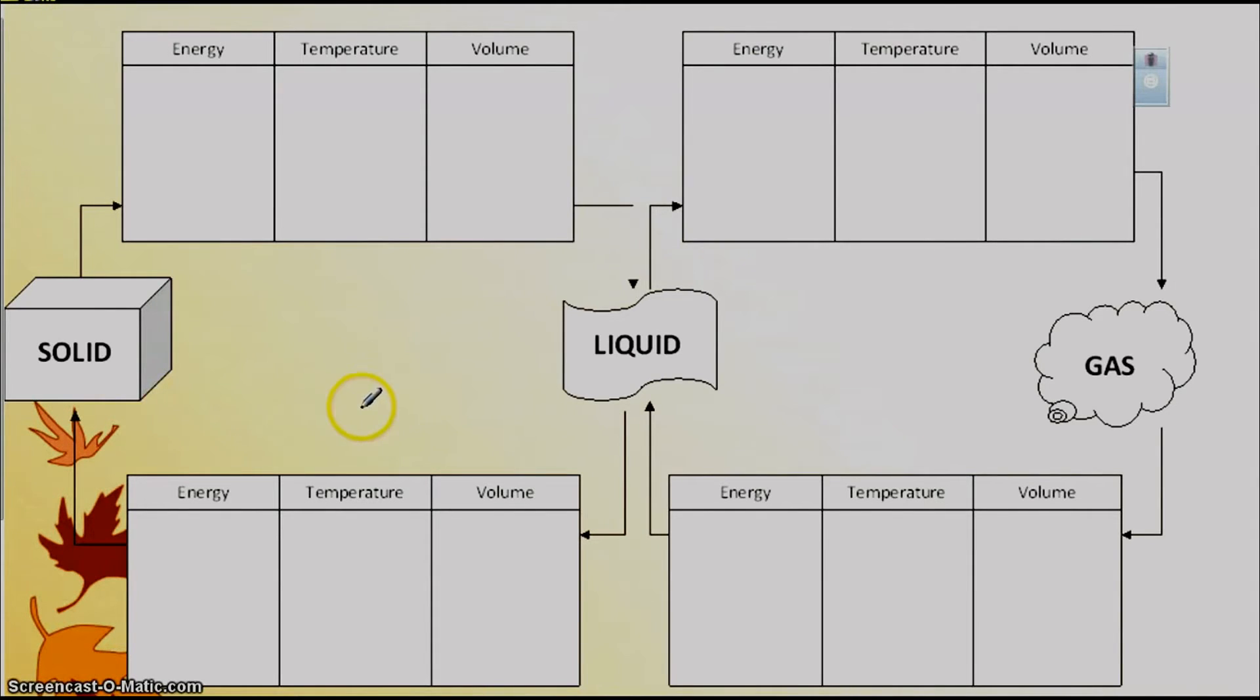All right. In this diagram, we're going to talk about what happens with energy, temperature, and volume as matter goes from a solid to a liquid to a gas and back again. So starting off with a solid, we are increasing our energy. And yes, you need to draw these arrows. And we are also increasing our temperature. And we are increasing the amount of space that the matter takes up because the molecules are getting further apart. And that solid is becoming a liquid. And we call this the melting point. For water, we know it's zero degrees Celsius or 32 degrees Fahrenheit.